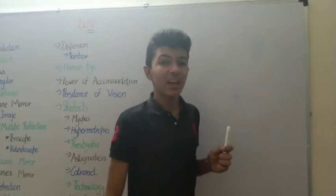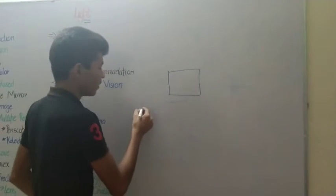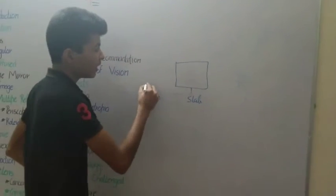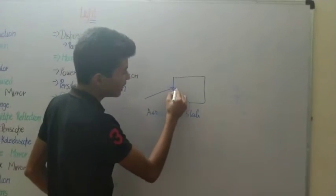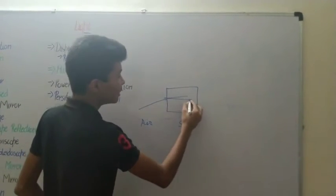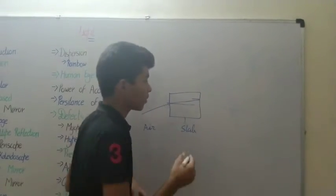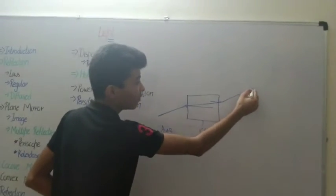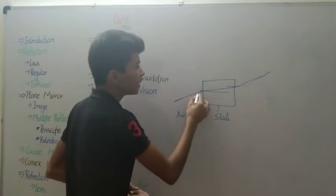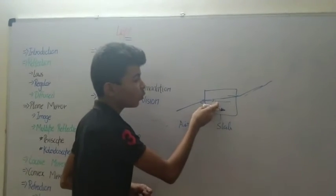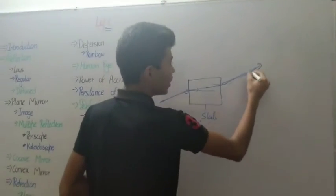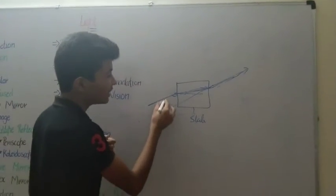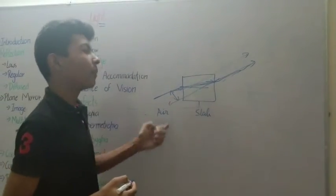A glass slab demonstrates refraction. When a light ray enters the glass slab, it is denser than air, so the ray bends toward the normal. When it exits the other side, the glass is now denser compared to air outside, so the ray bends away from the normal. The result is that the incident ray and the emergent ray are parallel to each other, but laterally displaced — they do not form a straight line but run parallel with an offset.